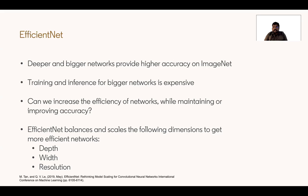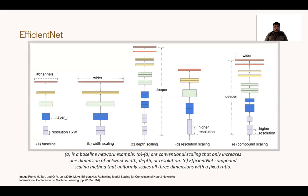EfficientNets balance and scale three dimensions to get more efficient networks: the depth of the network, the width of the network, and the resolution used by the network. A baseline network takes in a resolution of H×W and uses different layers, where the width refers to the number of channels. You can scale such a network by making it wider (increasing channels), deeper — as ResNet architectures do — or by increasing the resolution of the input to each layer. The authors claim that doing these individually is not very effective, but doing them in conjunction is quite effective, and that's what they leverage for EfficientNets.